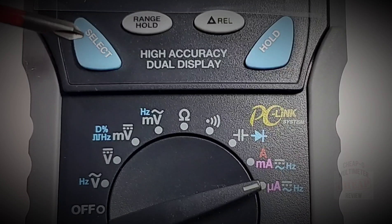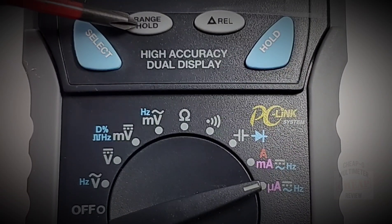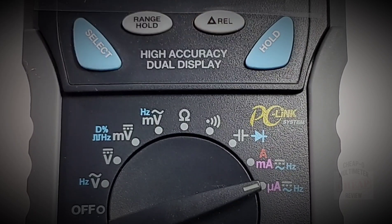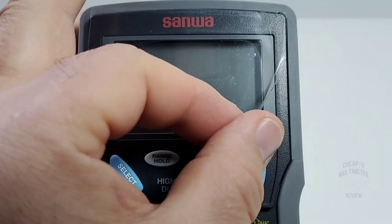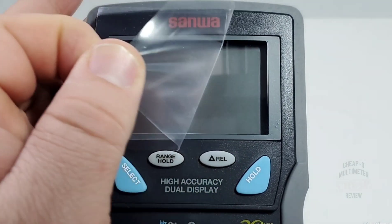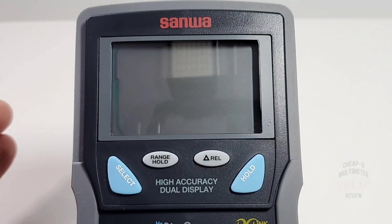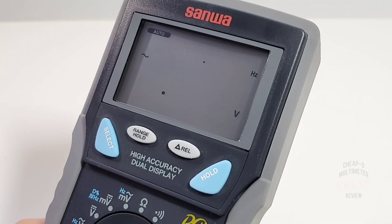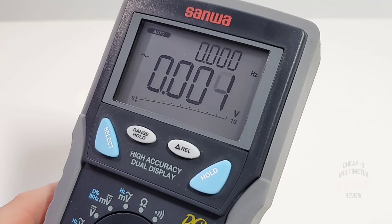At the top we have our selector button, beside that our range/hold, followed by a REL, and finally a touch hold on the right.